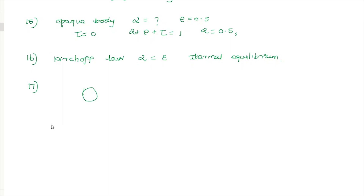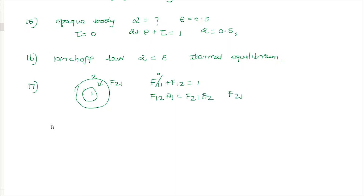For the radiation shape factor question with an inner and outer circle: using the summation rule, F11 + F12 = 1. Since F11 = 0 for a convex surface, F12 = 1. Using the reciprocal rule, F12 × A1 = F21 × A2, we can find F21. Then F22 = 1 − F21. Two shape factor questions of this type appeared.